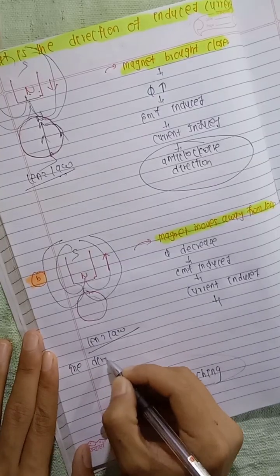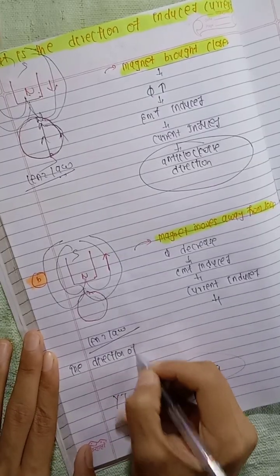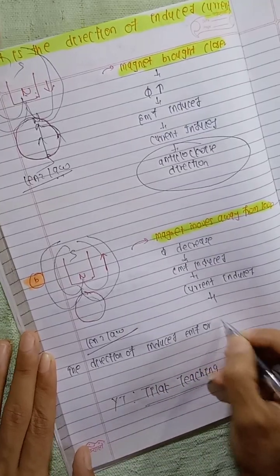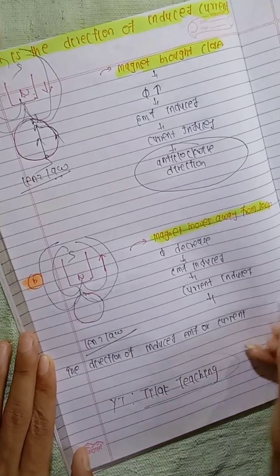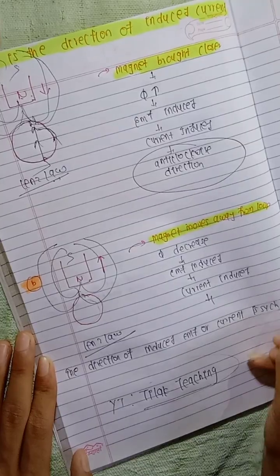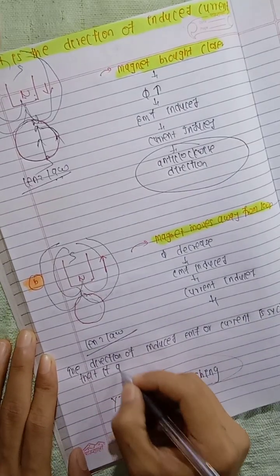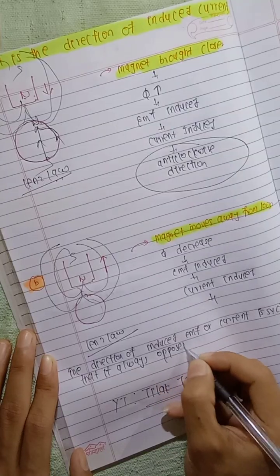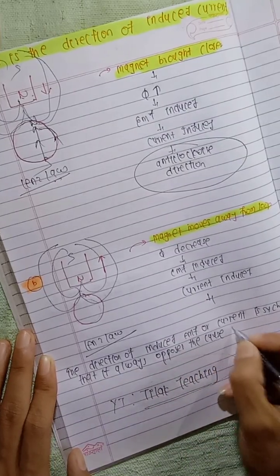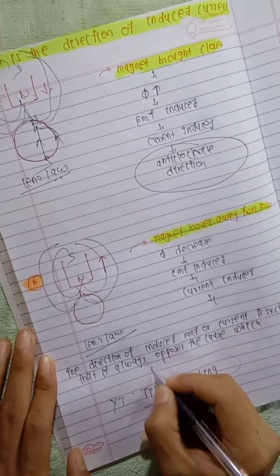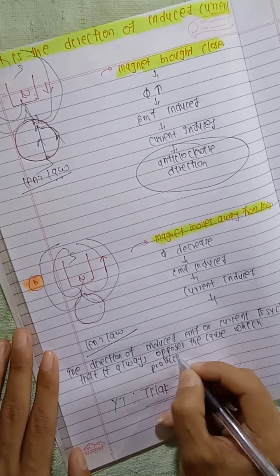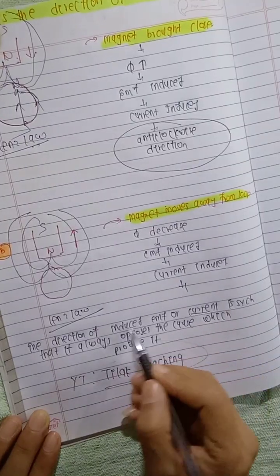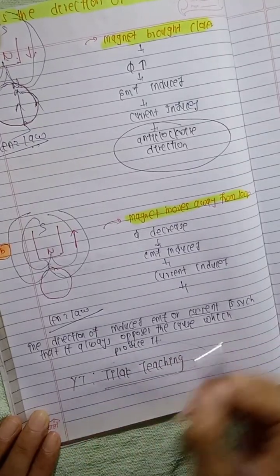The direction of the induced EMF and induced current is such that it opposes the cause which produces it.